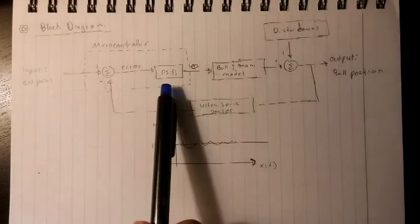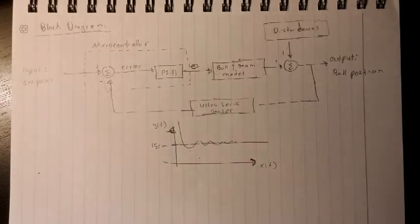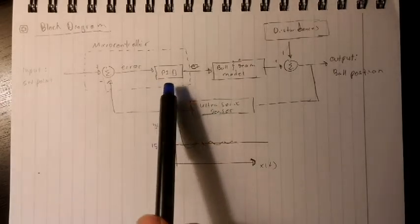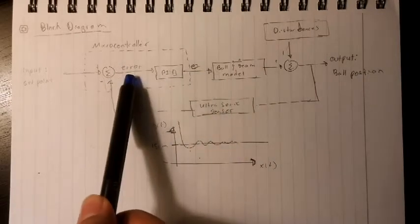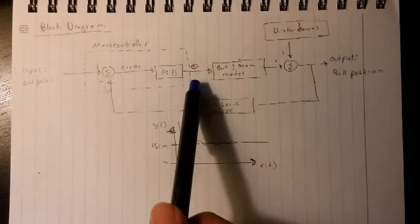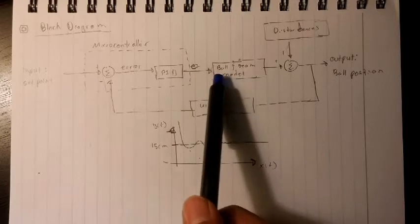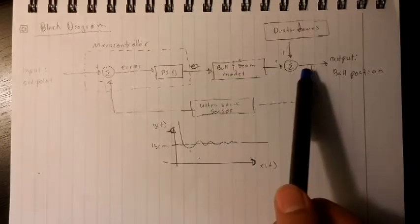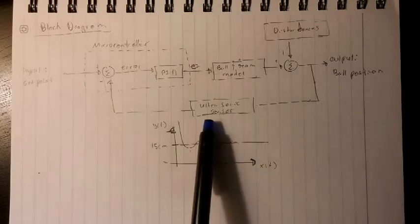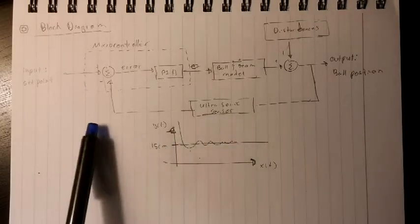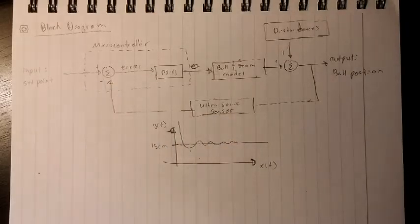This error is fed into our PID control algorithm. This PID control algorithm computes a new angle to try to reduce this error to zero. This new angle is then fed again into the ball and beam model, which produces an output that is again read via the ultrasonic sensor that is then fed back into the microcontroller.